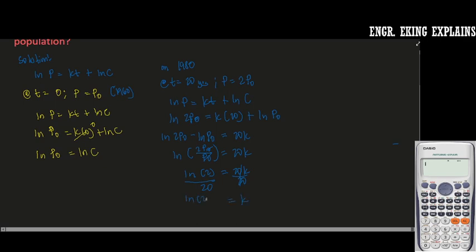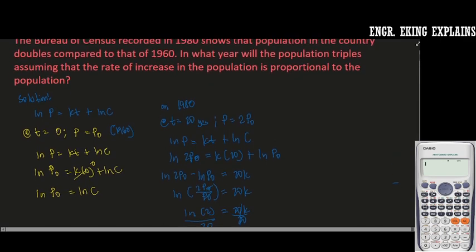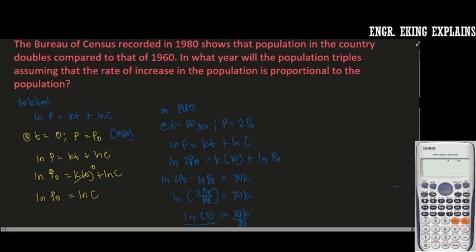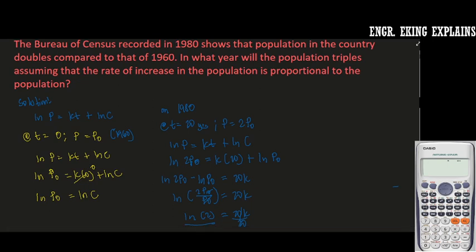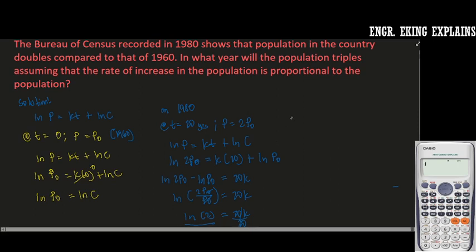as ln 2 over 20. Now the next question is: in what year will the population triples? So we are looking here for the year